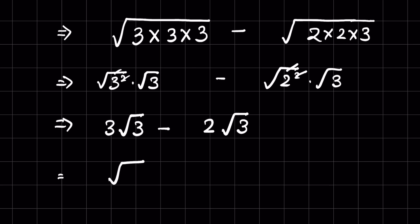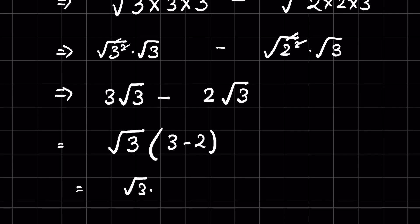Now square root of 3 is common here. So we can factor it out. So square root of 3 parenthesis 3 minus 2 or square root of 3 times 1 is equal to square root of 3. So this is the answer.